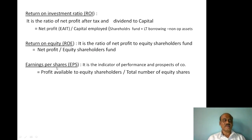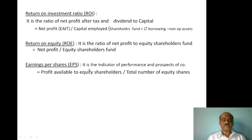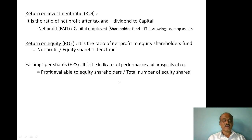Earnings Per Share (EPS) is an indicator of the performance and prospects of the company. The formula is: Profit Available to Equity Shareholders divided by Total Number of Equity Shares. This gives the earnings per share — net profit available to equity shareholders divided by the total number of equity shares.